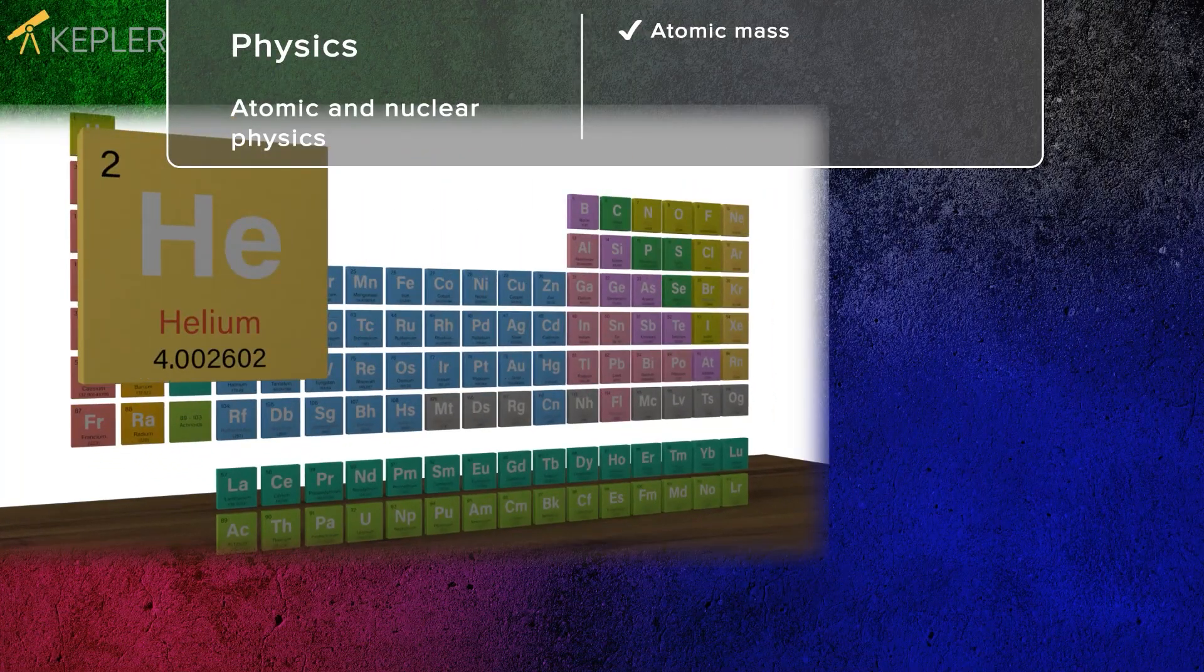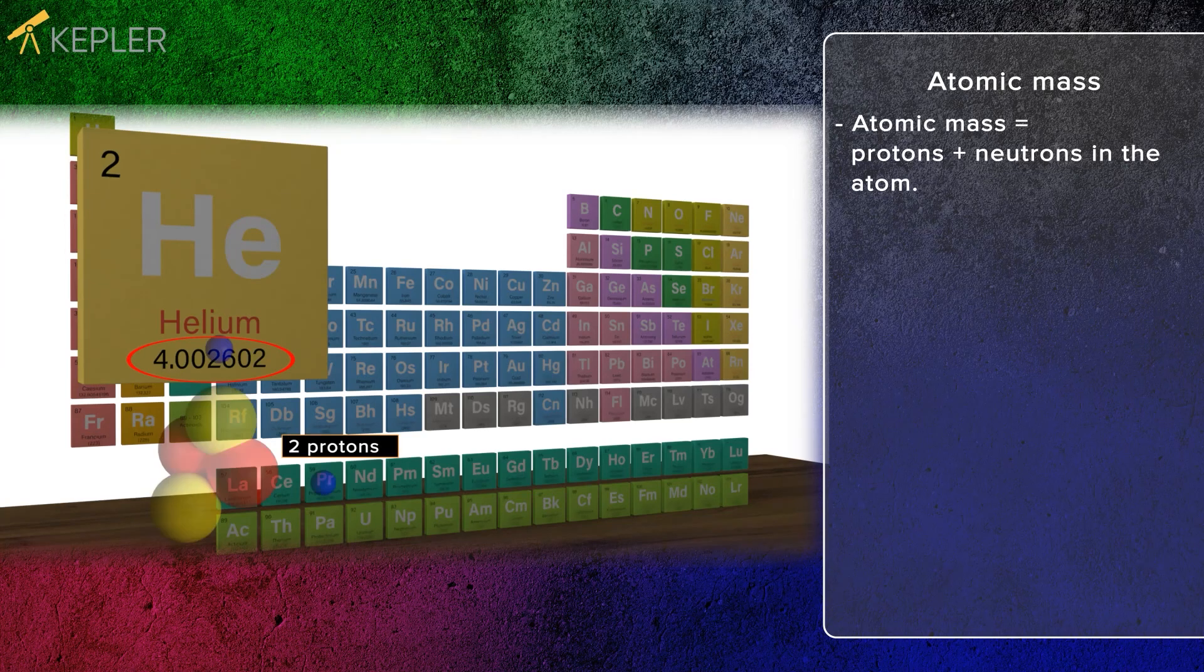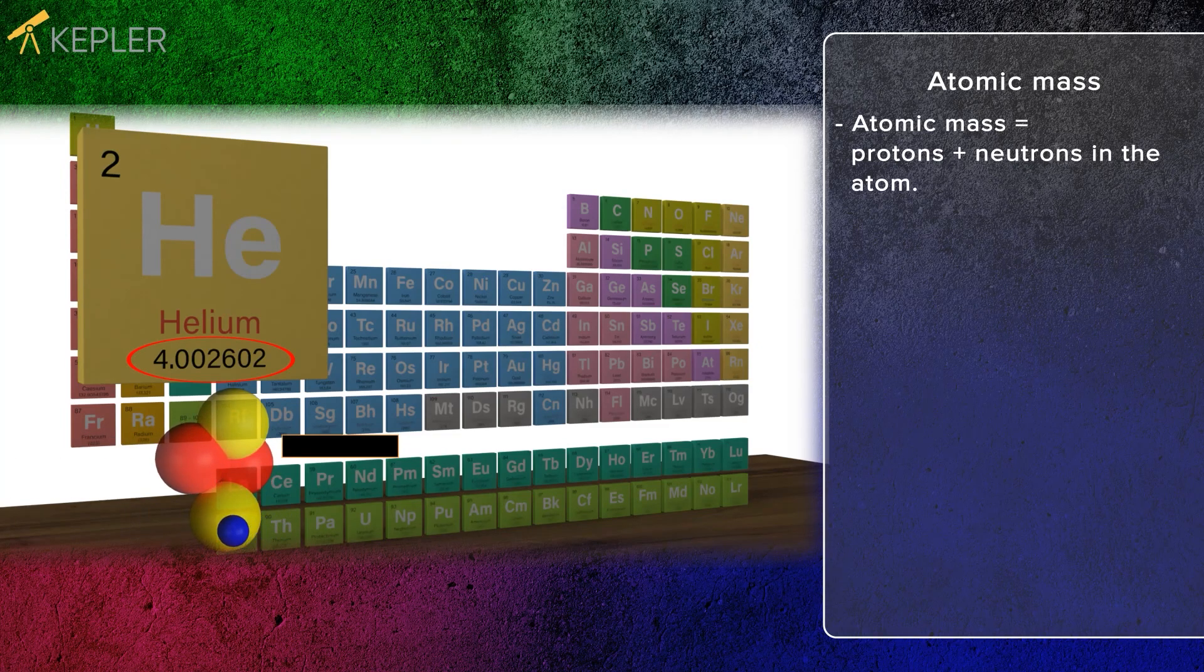The mass amount indicates how many protons and neutrons an atom contains. Mass number equals the number of protons plus the number of neutrons. This could also be written with the equation A equals Z plus N.